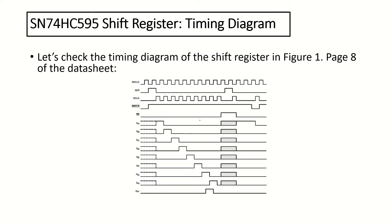This is the timing diagram taken from the data sheet of the shift register. You can see that the input sent from the SER input is triggered by the SR clock and pushed towards the first flip-flop. As soon as the R clock is received, it's inserted into the storage register. Since the OE pin is in low state, meaning that the output is enabled, we can see the shifted value in the output of QA. The output is shifted with each SR clock cycle and R clock cycle.